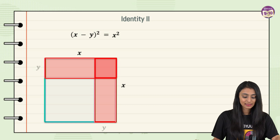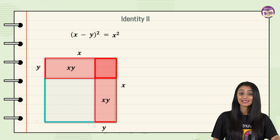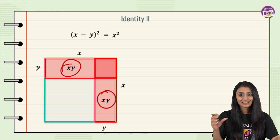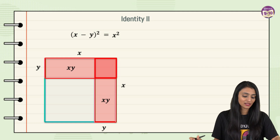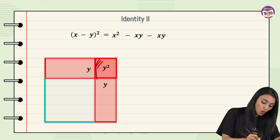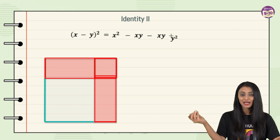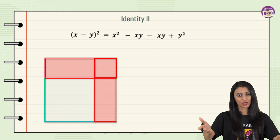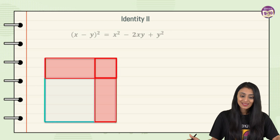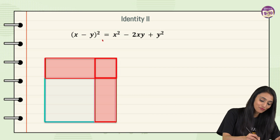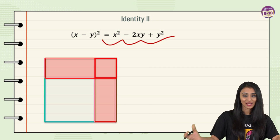These two red rectangles each have dimensions x and y, so each has area xy. Both must be subtracted from x², giving minus xy minus xy. However, the corner region of y × y was subtracted twice, so we add y² back. This simplifies to x² − 2xy + y², confirming our second identity: (x − y)² = x² − 2xy + y².